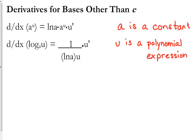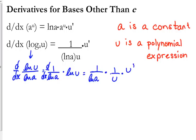The second part is if you have a common log with a different base — log base a of u. Before, when I had you write this in your notes, the way that we approached this was we rewrote that log as the natural log of u over the natural log of a. And remember, the natural log of a is a constant.